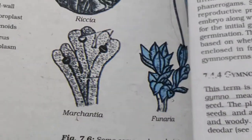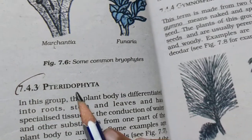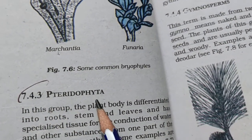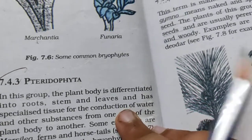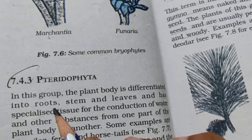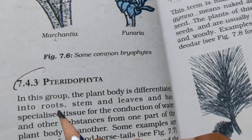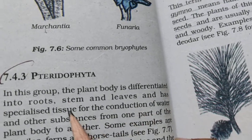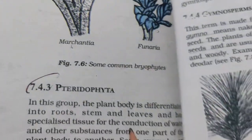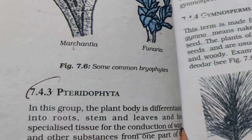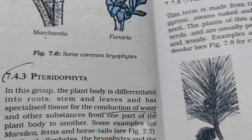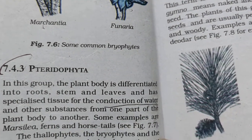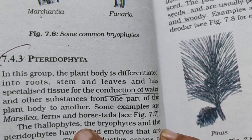Next one is Pteridophyta. In this group, the plant body is properly differentiated into roots, stems, and leaves. There is also special tissue for conduction of water and other substances from one part of the plant body to another. Examples include Marsilea, ferns, and horsetails.